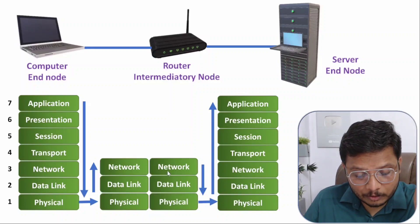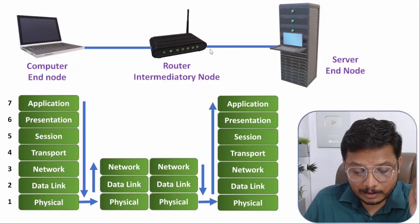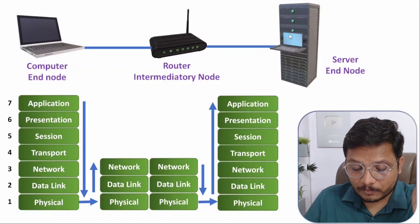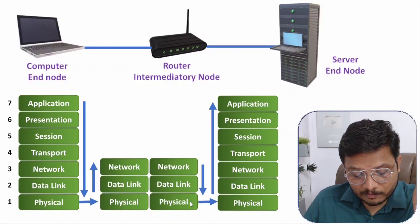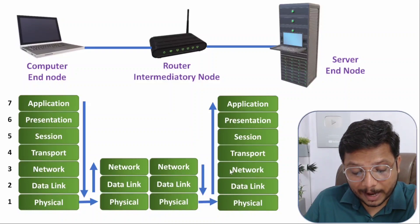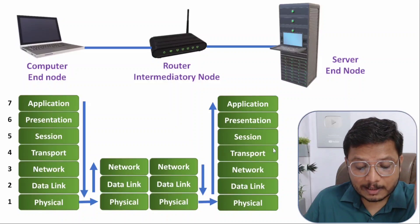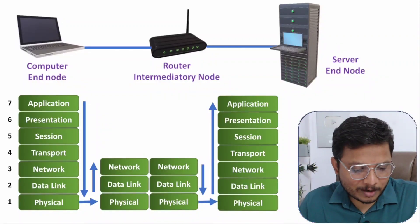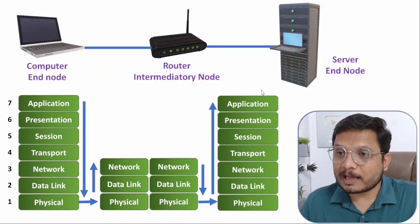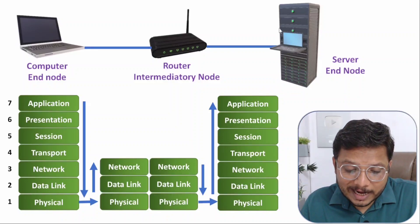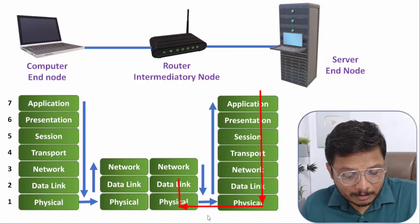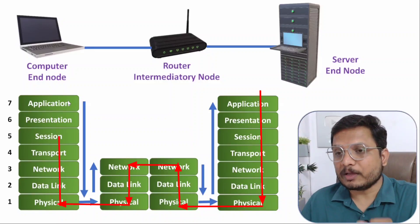The data is converted into frames at the data link layer and then given to the physical layer for transmission over the link to the server. The server receives the physical data, converts it into frames at the data link layer, then into packets, then into segments, and back into data at the application layer inside the Google server. Google then knows a user is asking for web data, responds to that request, and the response data travels back the same way through presentation, session, transport, and physical layers back to the client.